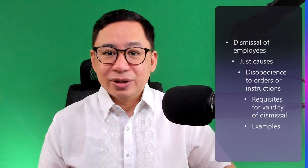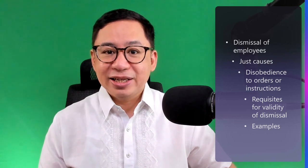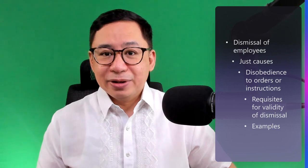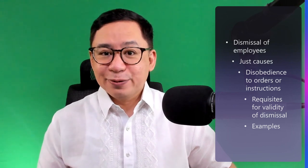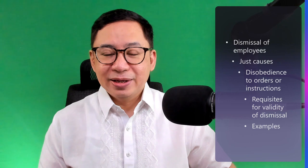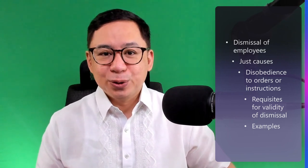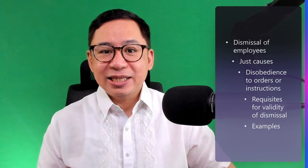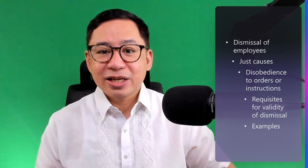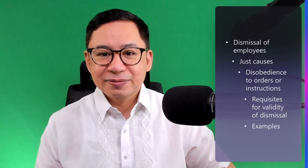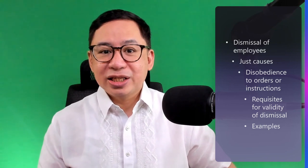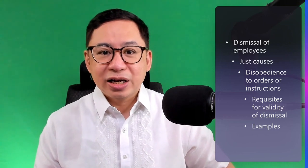Remember that the order must be reasonable. The reasonableness of an order or instruction depends upon the circumstances availing in each case. What is an example of a reasonable order? A directive prohibiting employees from using company vehicles for private purposes without authority from management. What are examples of unreasonable orders? Number one, a directive transferring an employee to a non-existent position. Number two, a directive ordering employees assigned in Basilan to report to the Manila office without giving them money for their transportation and living expenses. Number three, a directive discouraging its employees from going to the comfort room during working hours.